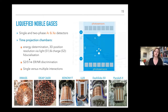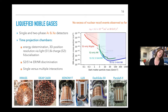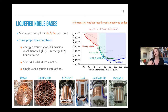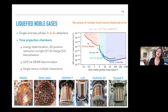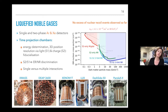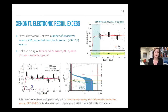Past experiments — XENON1T, LUX, DarkSide-50, and PandaX-2 — observed no excess of nuclear recoil events. In XENON1T, looking at the S2-only charge signal allows reaching a lower energy threshold, at the expense of higher background since the nuclear/electronic recoil discrimination is lost, which is why those exclusion limits are worse.